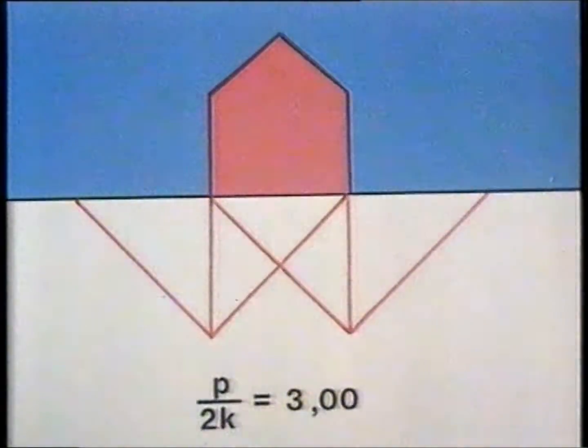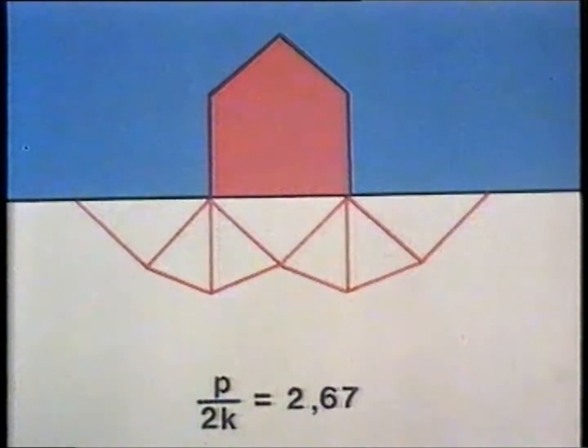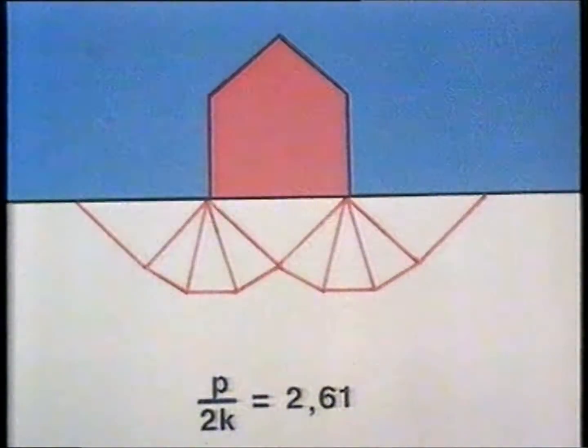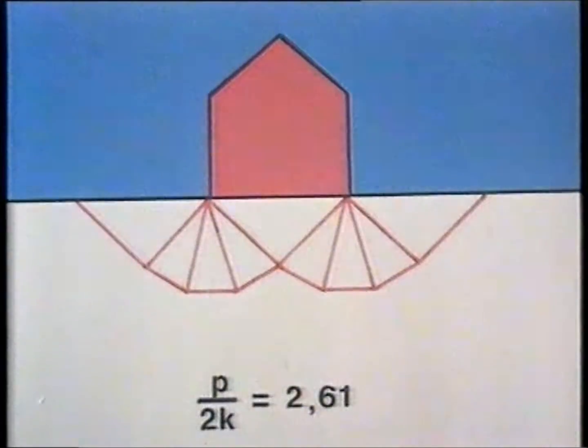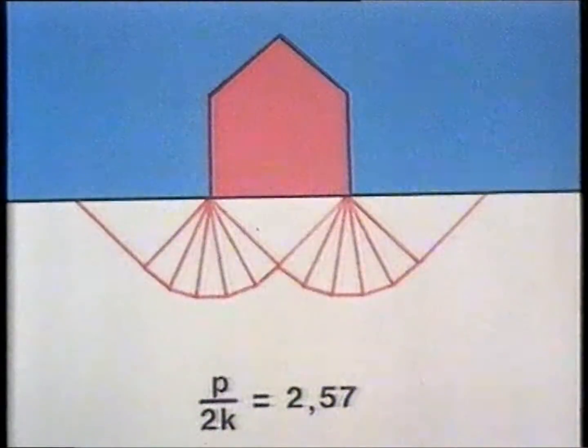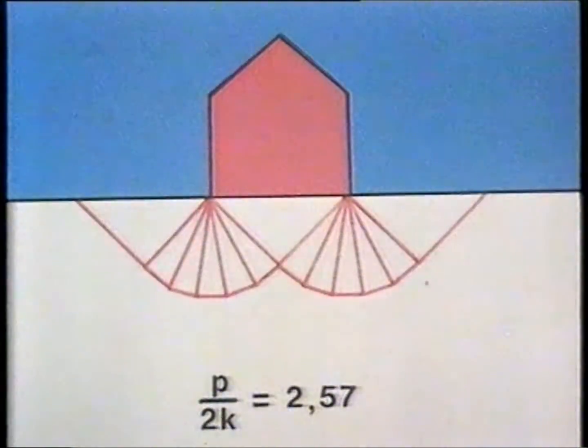Adding the symmetrical left hand side does not change our result. By dividing the field into more triangles we find p over 2k equal to 2.67 or 2.61. And with an infinite number of triangles in the two fans we find p over 2k equal to 2.57 which corresponds to the so-called slip line solution.